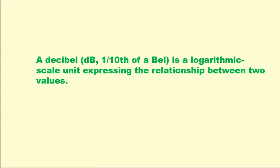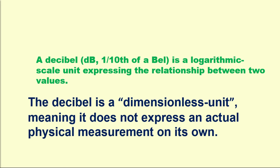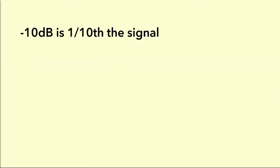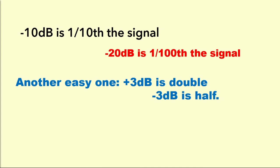A dB is a logarithmic scale unit expressing the relationship between two values. The dB is a dimensionless unit, meaning it does not express an actual physical measurement on its own. A dB is a logarithmic ratio. Like minus 10 dB is one tenth the signal. Minus 20 dB is one one hundredth the signal. Another easy one, plus 3 dB is double, minus 3 dB is half. But remember, this doesn't tell you double of what.